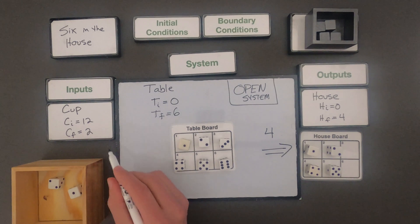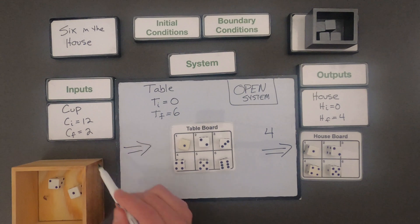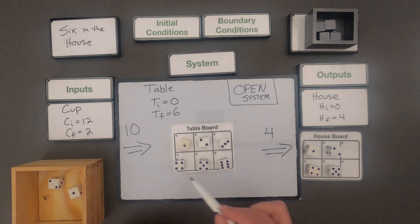If we look at what's entered the system, well since we had 12 to begin with and we ended up with 2, that means 10 have entered the system. How many are here? There's 6 dice in the system. Why aren't there 10? Because 4 of them have moved over here.